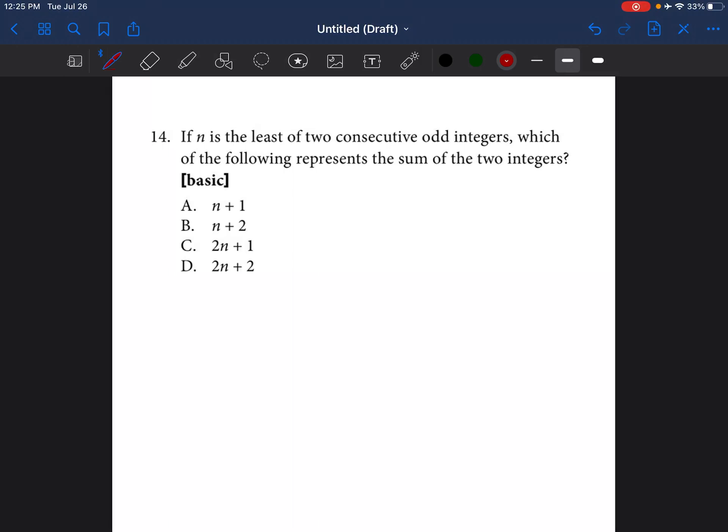Okay, so this video is going to be comprised of three different problems that a subscriber needed help with. So I'm just going to try to break them down to make them as simple and as easy as possible. So this problem says, if n is the least of two consecutive odd integers, which of the following represents the sum of the two integers? It seems complicated, but it's not as complicated when you understand what they're looking for.